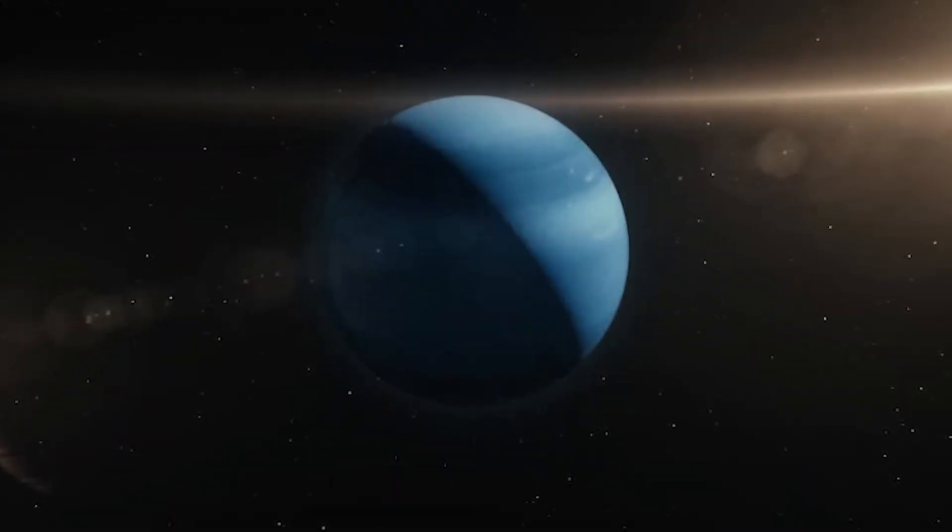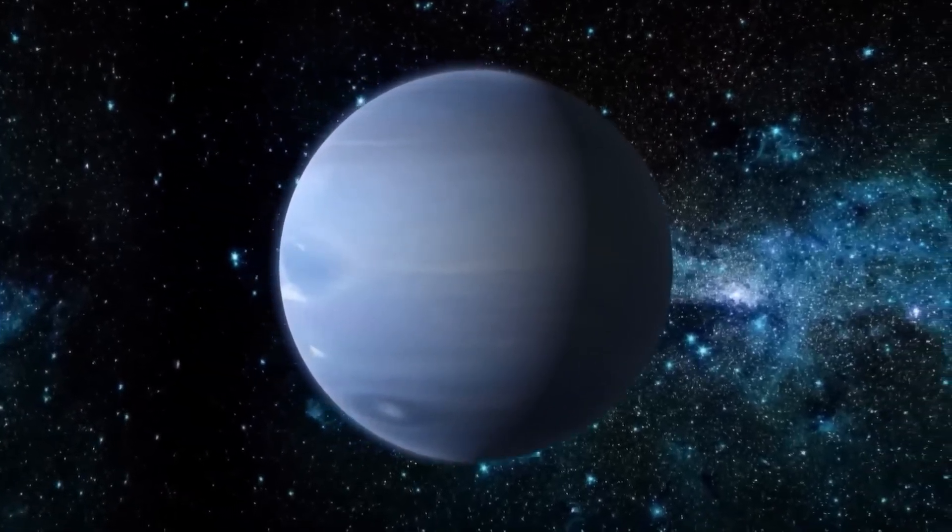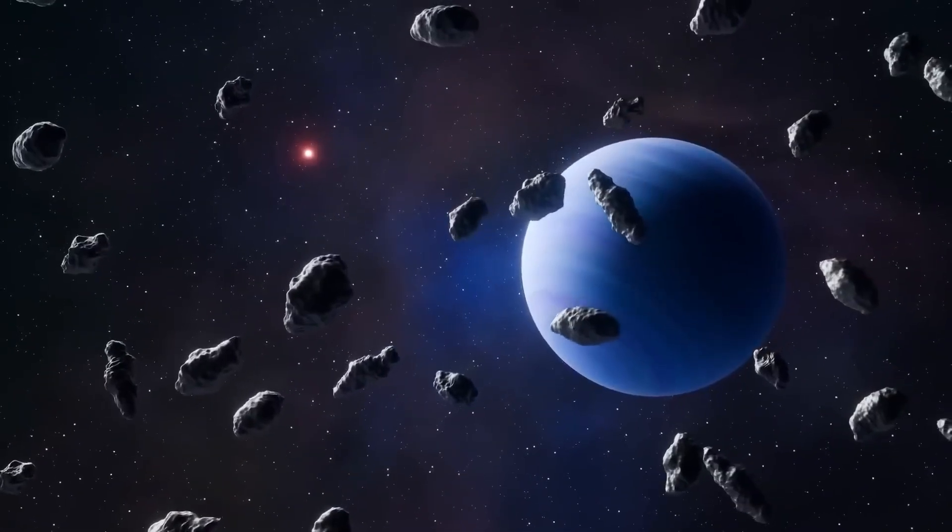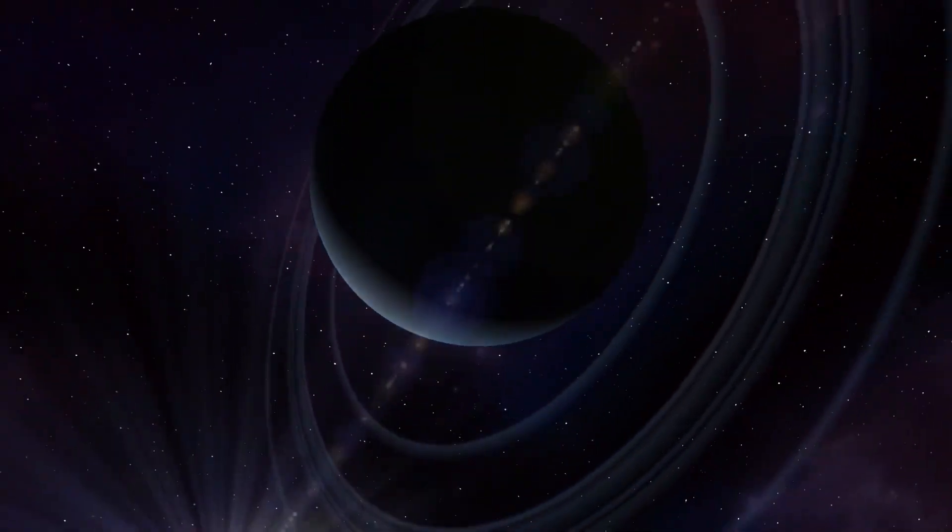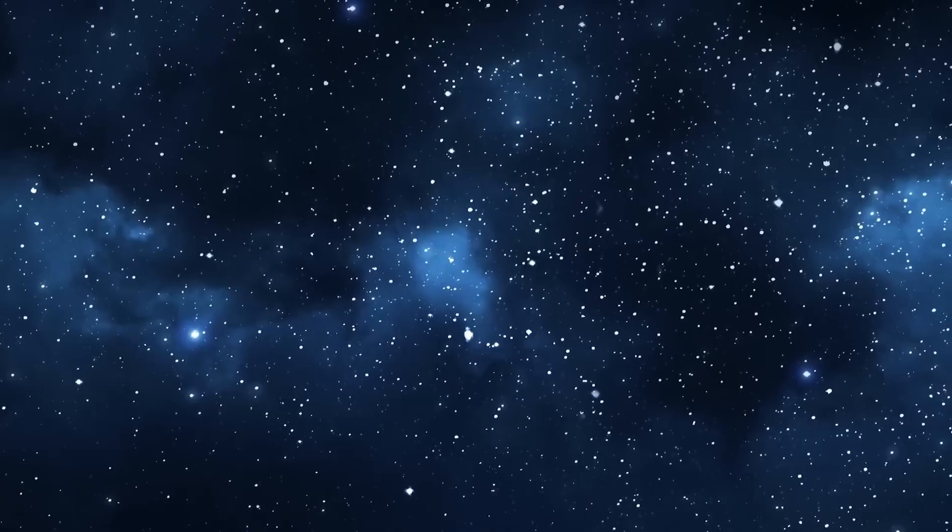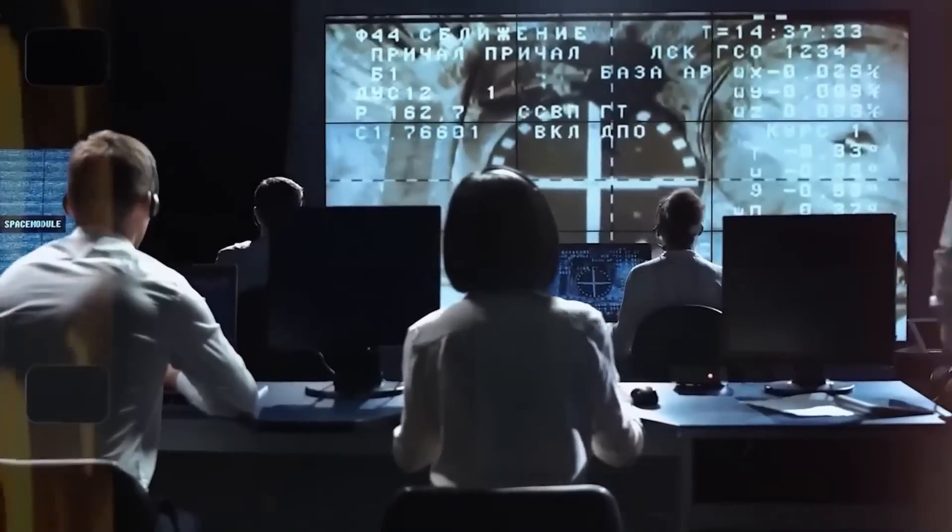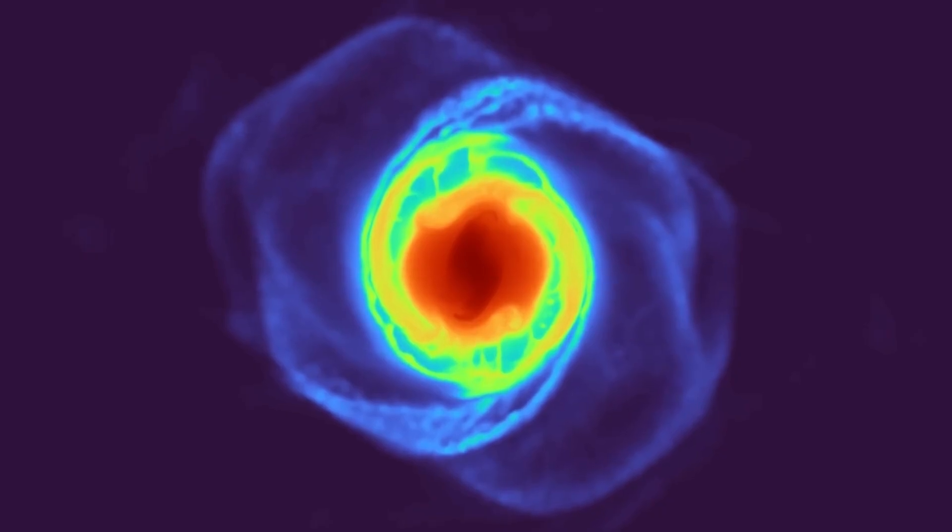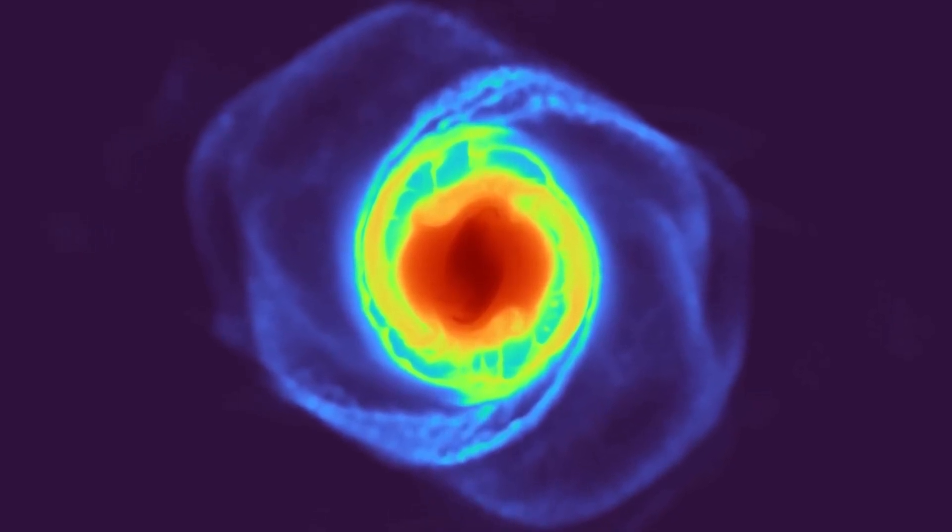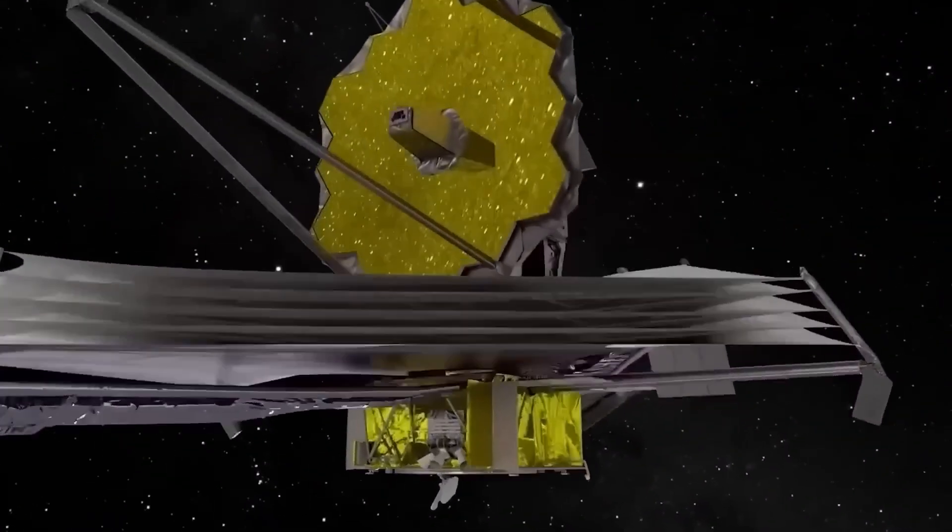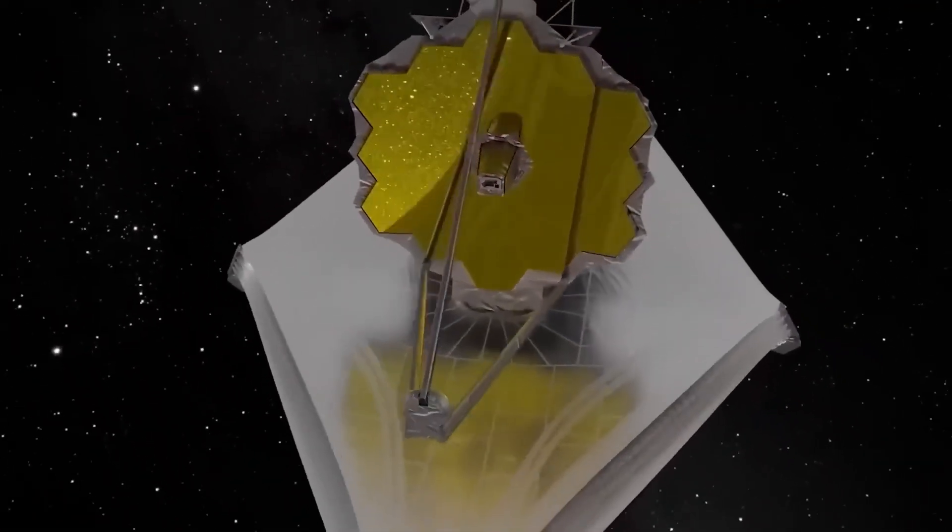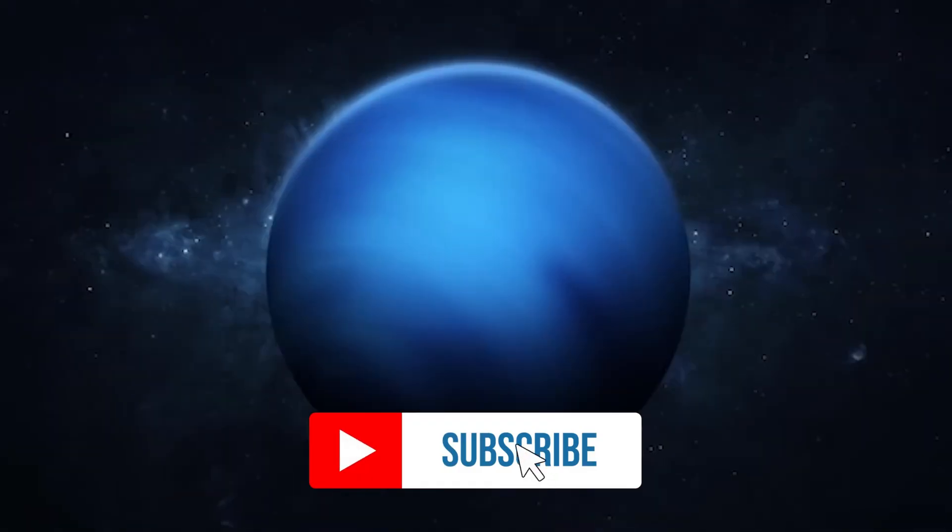Planetary impacts are still happening right now, reshaping worlds at the edge of our system. The event instantly rewrote textbooks. Neptune, often overlooked in favor of Jupiter and Saturn, suddenly became the stage for a cosmic drama that no one expected. And the sheer clarity of Webb's infrared data means we're not just seeing the aftermath. We're seeing physics in motion, energy unleashed on a planetary scale, and a glimpse of how fragile even giant worlds can be. When the object hit Neptune, it unleashed a chain reaction of raw cosmic power.